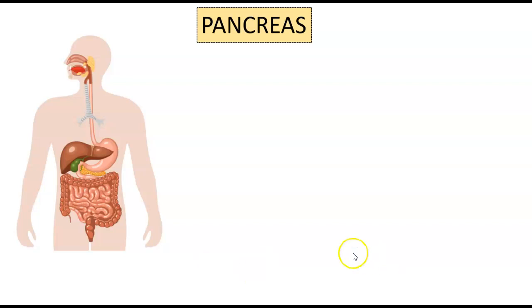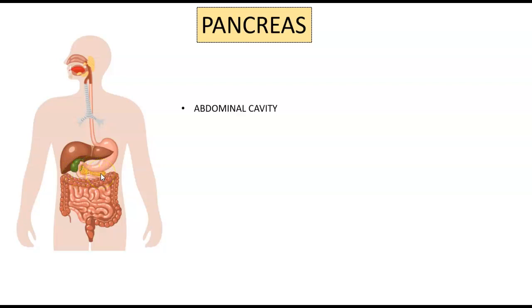The pancreas is a retroperitoneal organ located in the upper abdominal cavity. It transverses across this area and is about 6 to 10 inches long. It has two major functions.